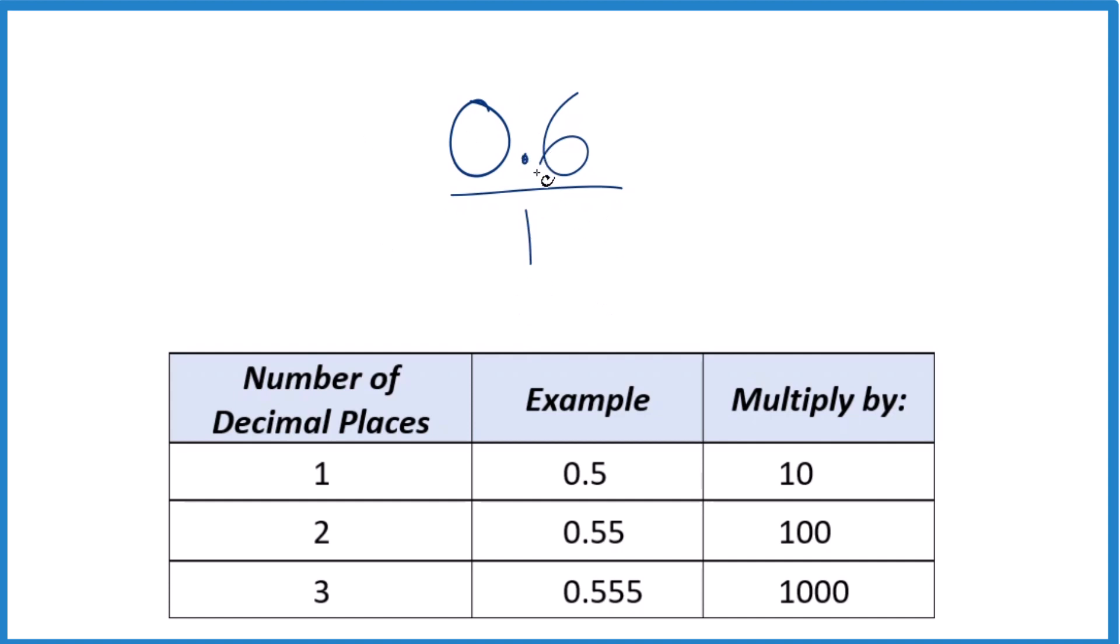It'd be nice to get rid of the decimal point here, make this a whole number. And to do that, what we could do is we could multiply by 10. Because 10 times 0.6, that's going to equal 6. And there's our whole number. So when we only have one decimal place here, we can multiply by 10 to get the whole number.